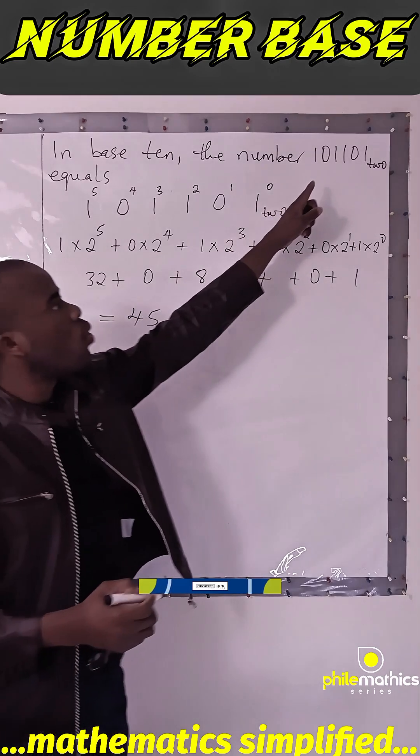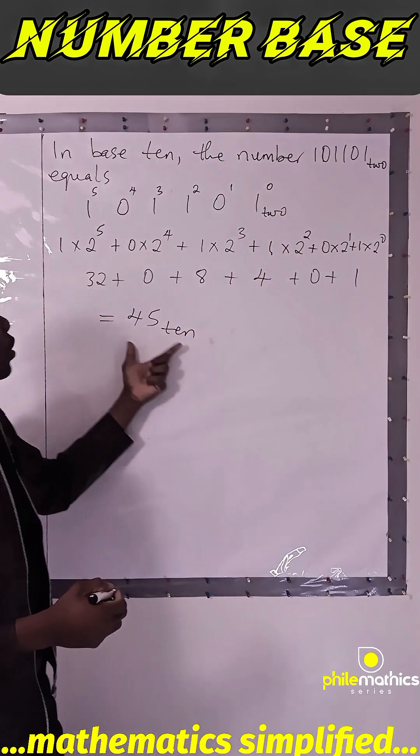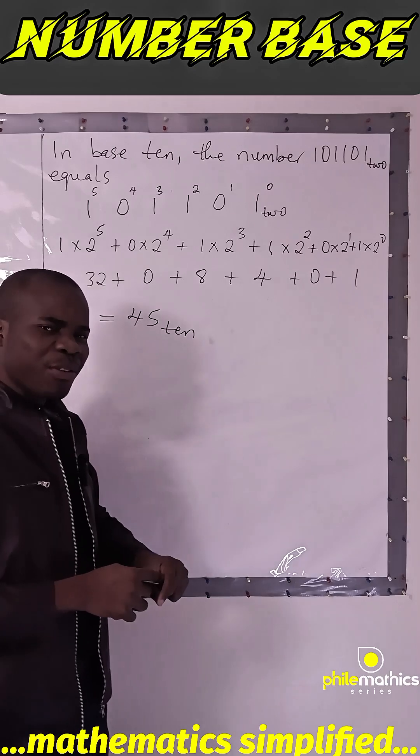That means, 1, 0, 1, 1, 0, 1 in base 2 equals 45 in base 10. Thank you for watching.